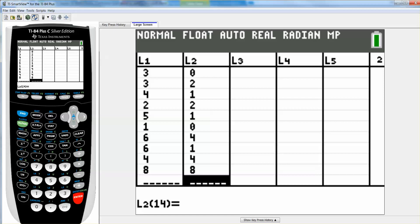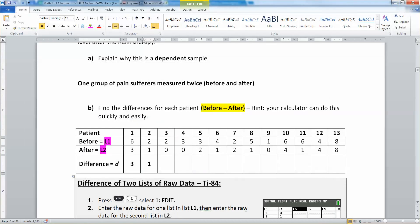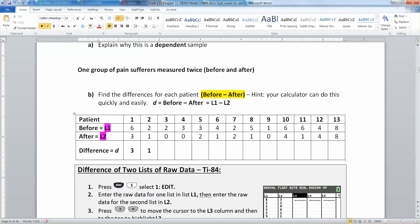All right, so now I want to find L3, which is what I'm really interested in, which is the differences, and because they set it up to be before minus after in our problem, then we want to take L1 minus L2. So let me write that in real quickly. There we have it. So D is your difference, that's before minus after, that would be L1 minus L2.